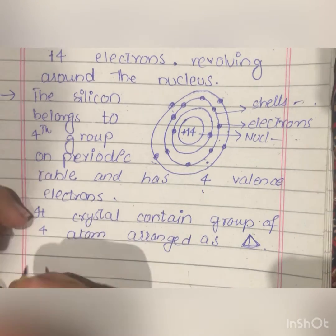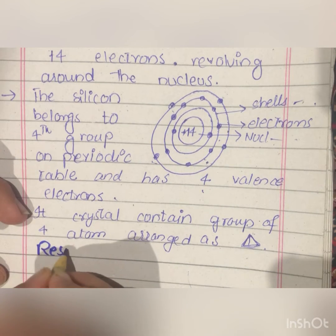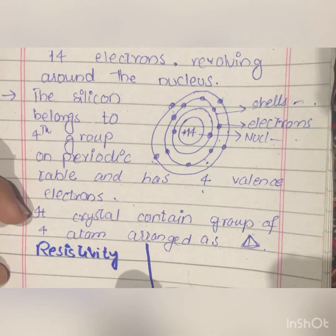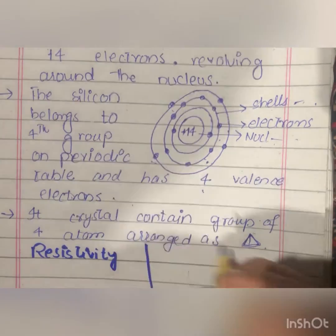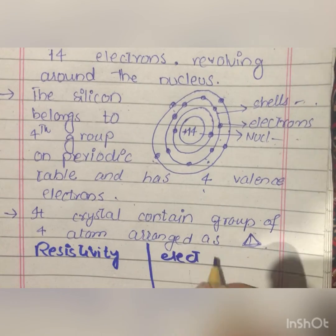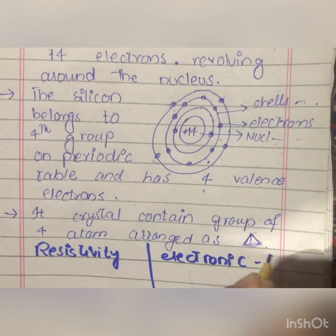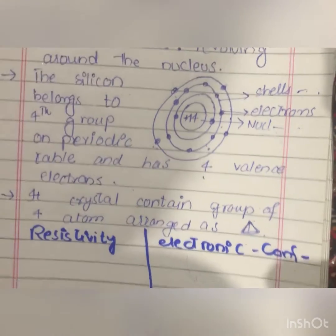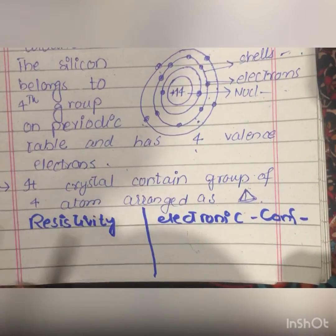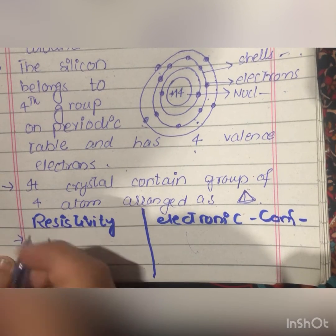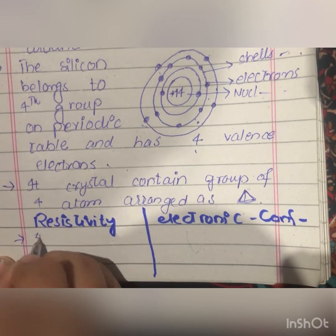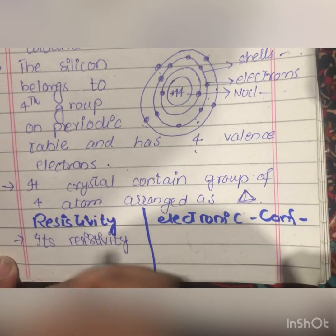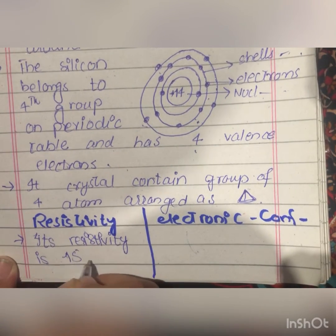Now let's look at the resistivity of silicon. Its resistivity is 1500 ohm-metres.